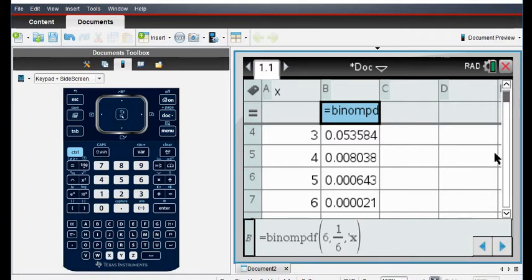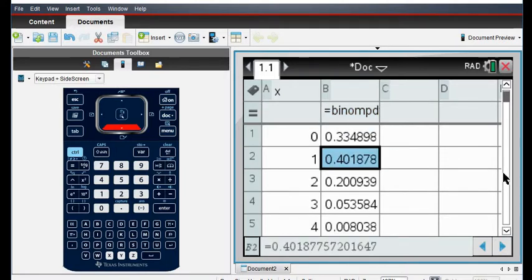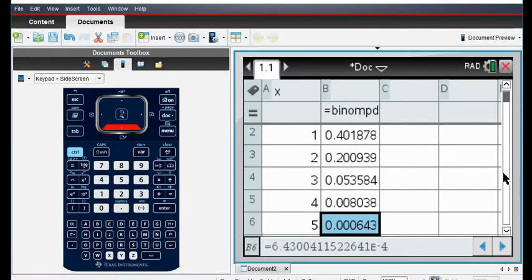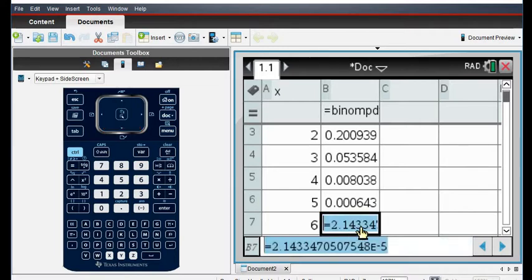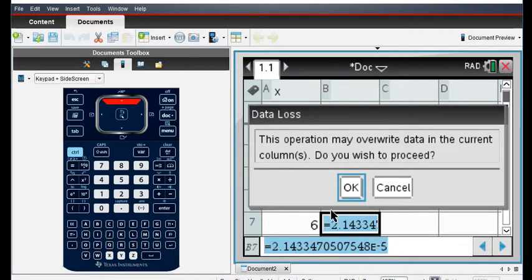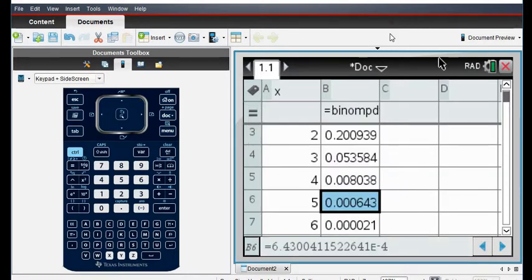So this has gone through and does give me all of my values, all of my probabilities. For 5 and 6, if you notice, those are very, very unlikely to happen. This is almost a 0% probability. This happens 0.0021% of the time, which is very, very unlikely. If you ever see this E in your calculator, it means scientific notation. So that's how that is written.